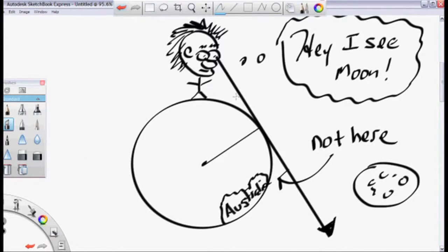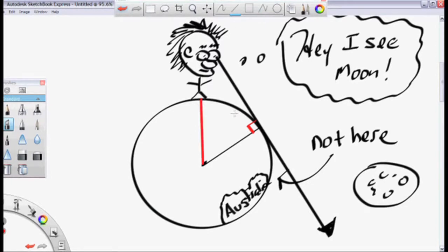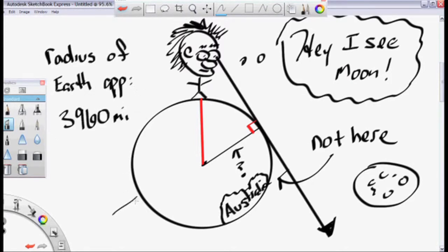So the horizon makes a 90-degree angle with the radius of the Earth. Well, what is the radius of the Earth? Well, we can look that up. It's approximately 3,960 miles. Of course, the Earth is not a perfect sphere, and the radius might vary depending on your location on the Earth.